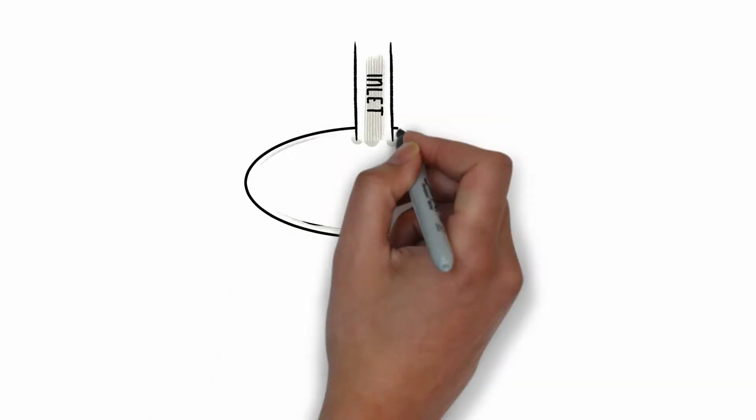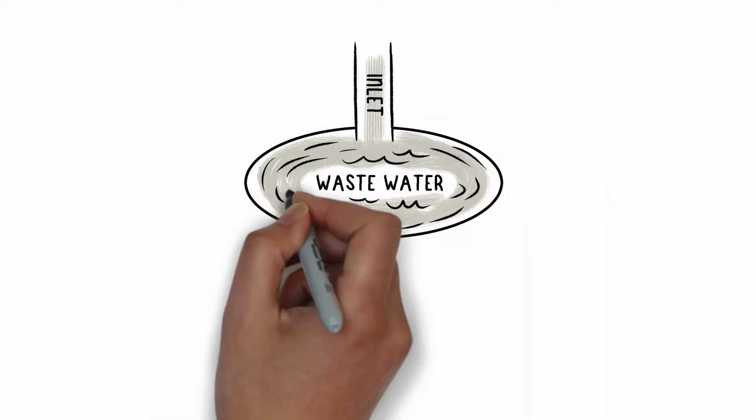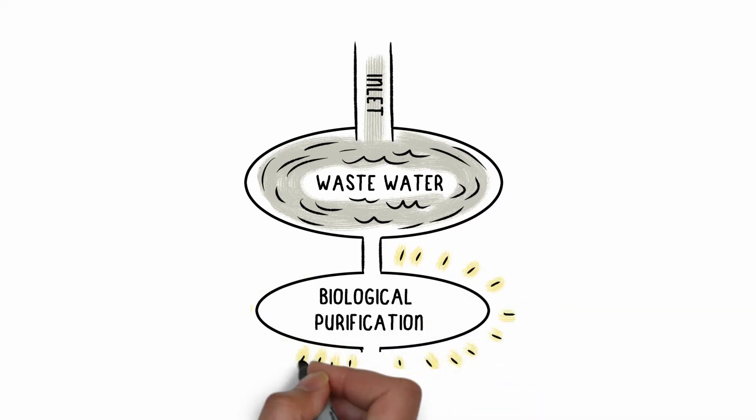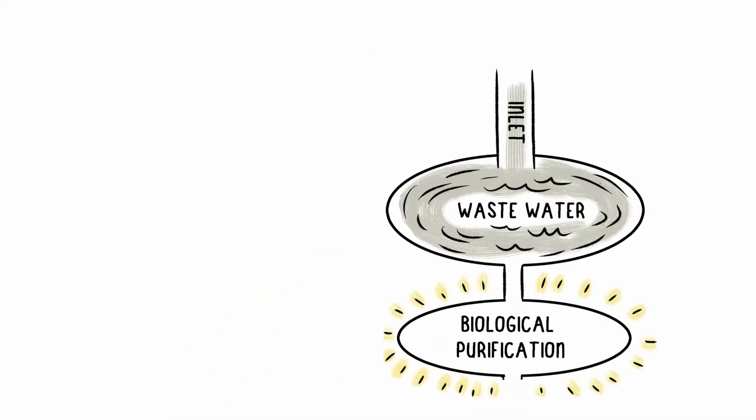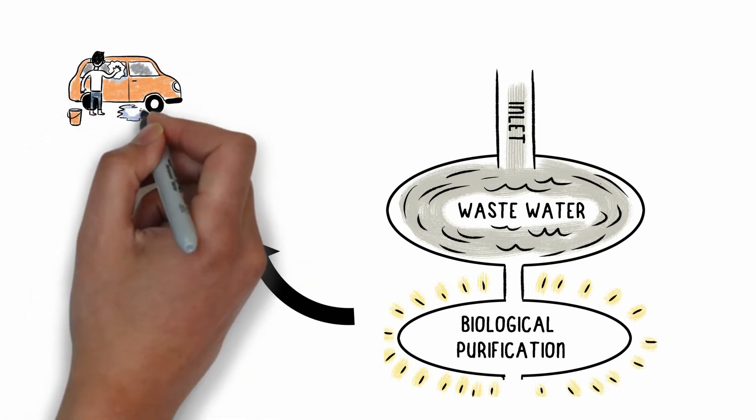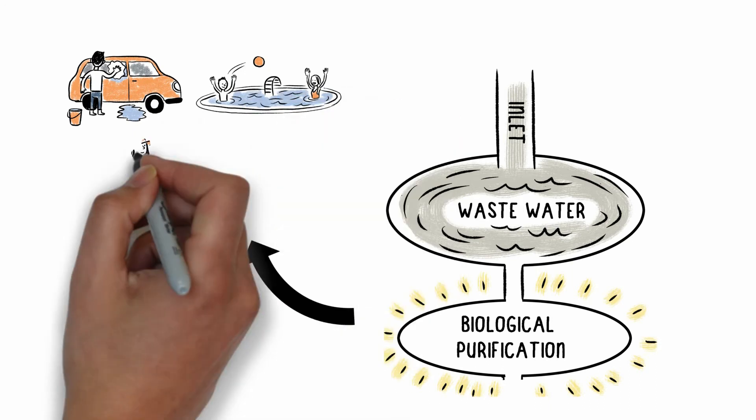The first stage is biological treatment, where wastewater is exposed to a special and 100% natural bacteria that digests all the impurities in the water. This water can then be used for irrigation, flushing, or other non-potable uses.